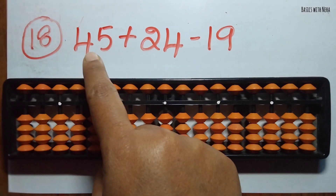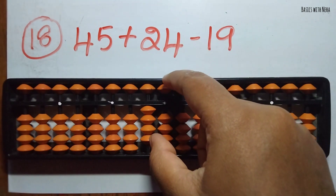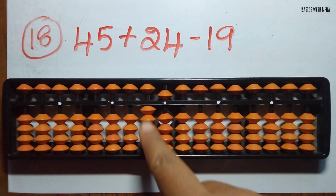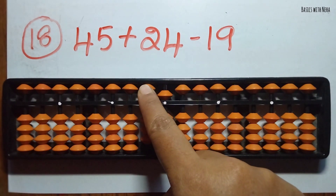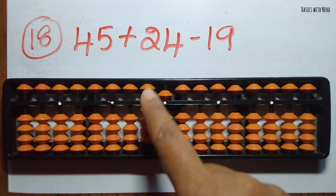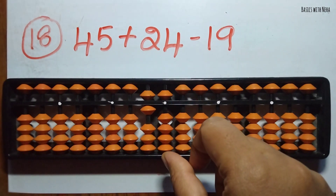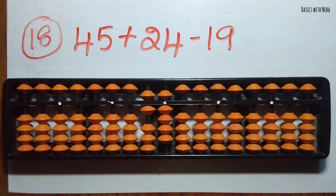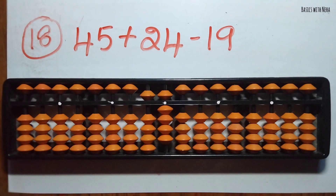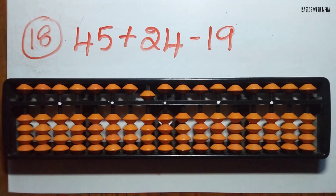The 18th sum: 45 plus 24 minus 19. First take 45. Now we should add 24 — to add 2 in the 10's rod, use the small friend formula: plus 2 equals plus 5 and minus 3. Plus 4 can be added directly in the 1's rod. Now minus 19 — minus 1 can be done directly in the 10's rod and minus 9 can be done directly in the 1's rod. The answer is 50.